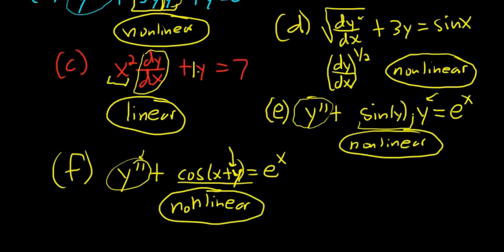Hopefully this video made sense. Keep in mind: it's linear if Y and all of its derivatives appear to the first power, and in front of Y and all of its derivatives you must have pure functions of x. On the right-hand side, you should always have a pure function of x. I hope that helped.